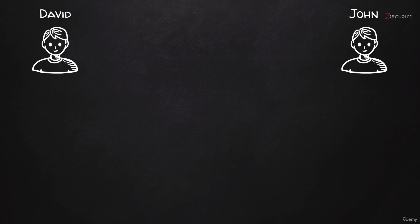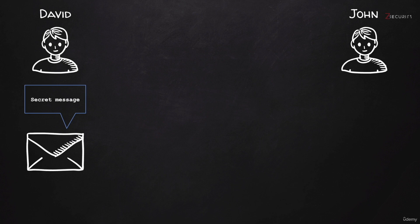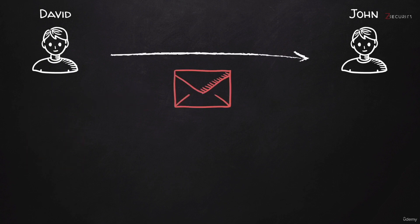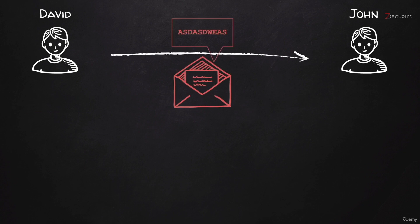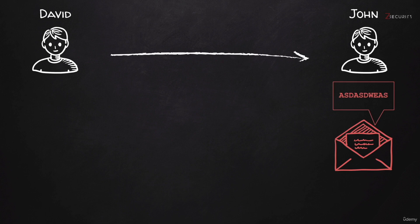Let's have an example where we have two people, David and John. We're just going to assume that David wants to send a message to John, and the content of this message is 'secret message.' If David wants to protect his message from anyone who might intercept it, he can use an encryption key to encrypt this message, which will transform the message into gibberish. He can then send this message to John using any method — email, post, or text message. And if this message gets intercepted, the contents will be gibberish. John will receive the message and use the same encryption key to decrypt it and reveal its content, which was 'secret message.'